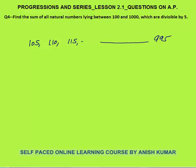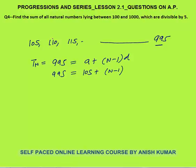We need to calculate the sum, but first we must find the number of terms. Let the nth term tₙ = 995. We know tₙ = a + (n−1)d, where a = 105 and d = 5 (since 110 − 105 = 5).